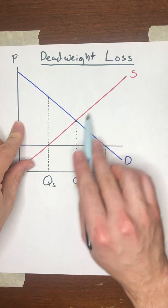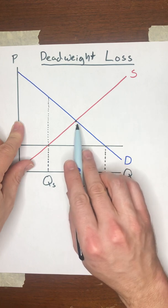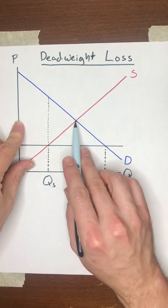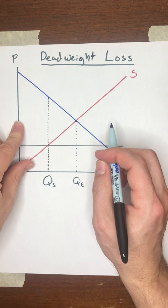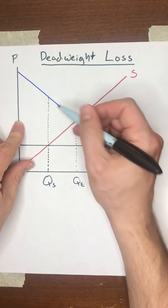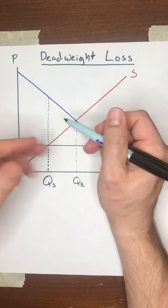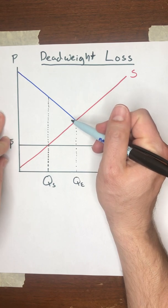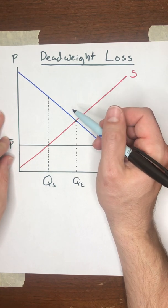These sellers wouldn't sell because the price is too low for them to make money. These buyers wouldn't buy because the price is too high for them to be willing to pay. And so all of this area would be captured and split somehow between the buyers and sellers in terms of consumer surplus and producer surplus.